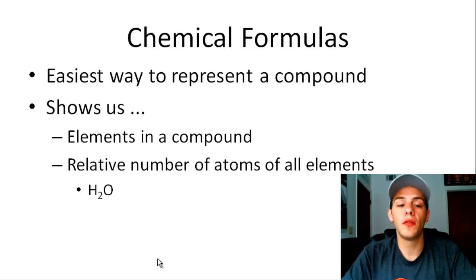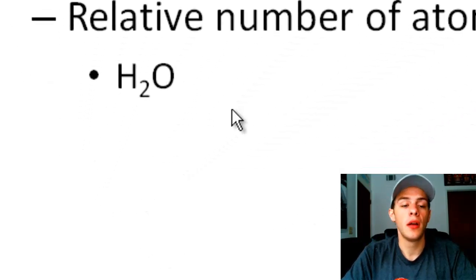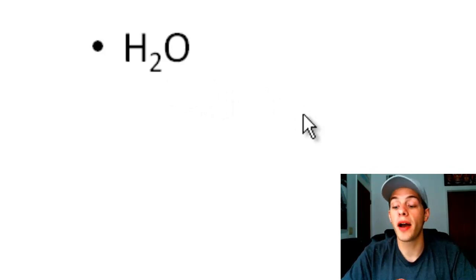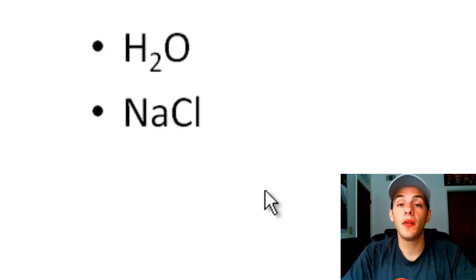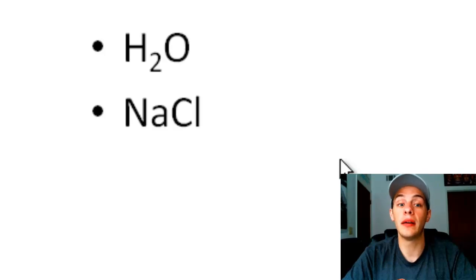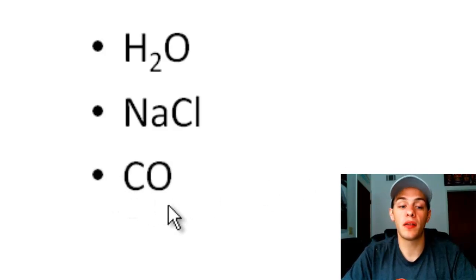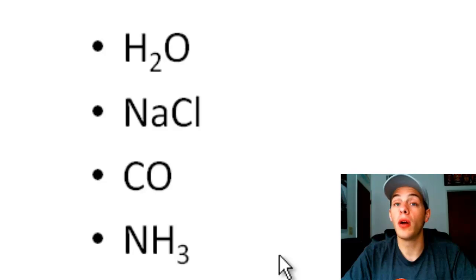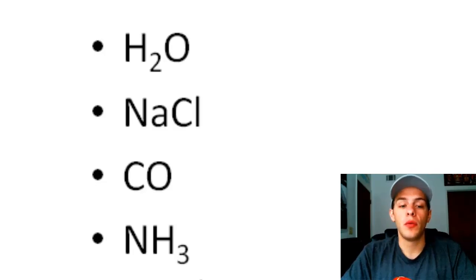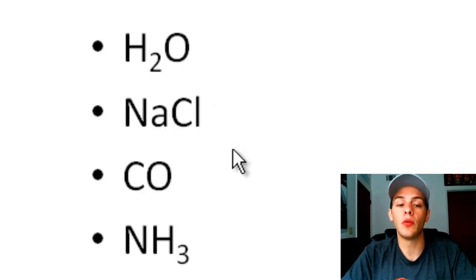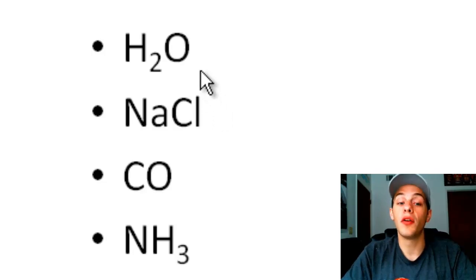For instance, the formula H2O is the chemical formula for water, telling us there is a 2-to-1 ratio of hydrogen to oxygen. NaCl is the formula for sodium chloride, showing a 1-to-1 ratio of sodium to chlorine. CO is the formula for carbon monoxide, also a 1-to-1 ratio of carbon to oxygen. And NH3 is ammonia, with a 1-to-3 ratio of nitrogen to hydrogen. Chemical symbols represent the elements, and subscripts indicate relative amounts. Note that a subscript of 1 is omitted — it is understood but not shown.